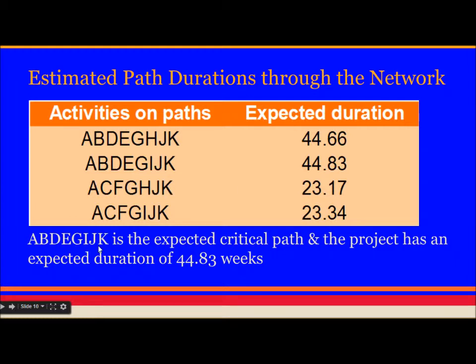Now the expected duration comes as these for each of the path. And the critical path becomes this one. A, B, D, G, I, J, K is the expected critical path. Which comes to be 44.83.